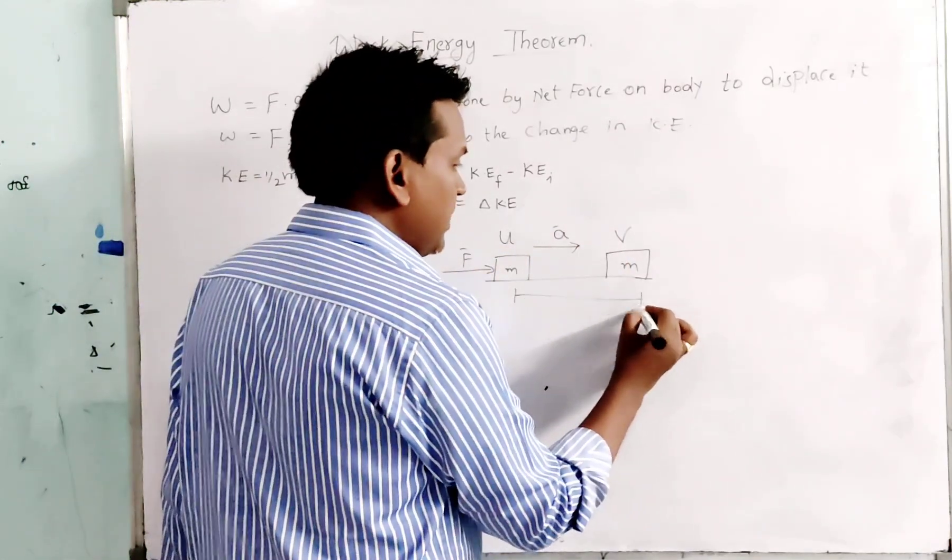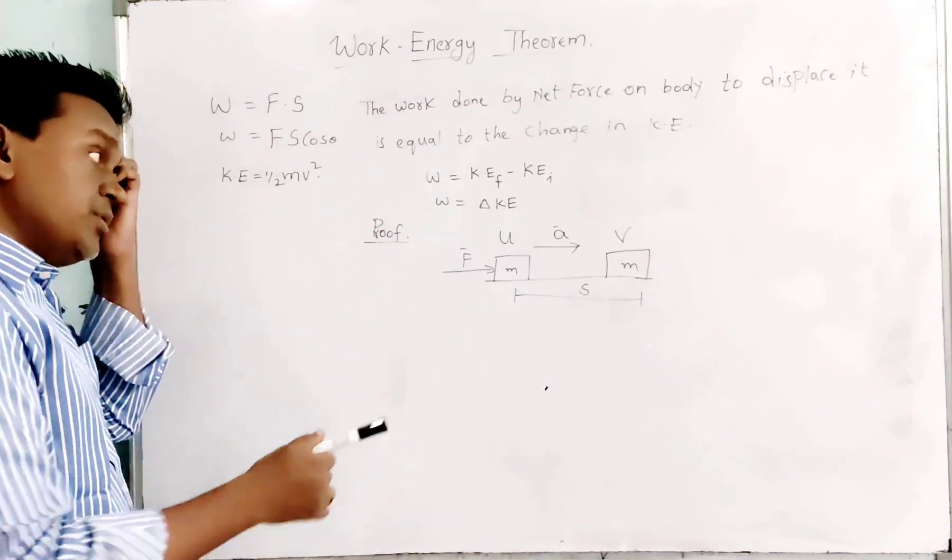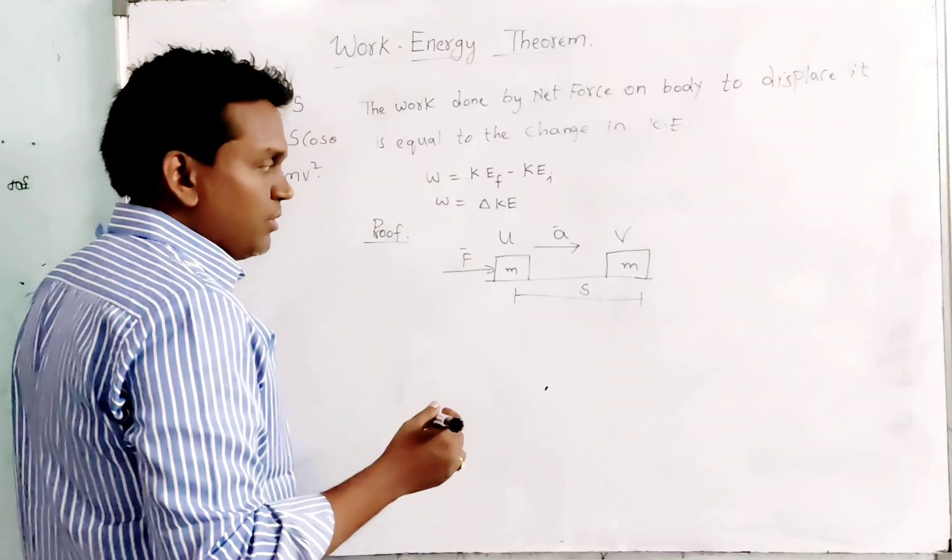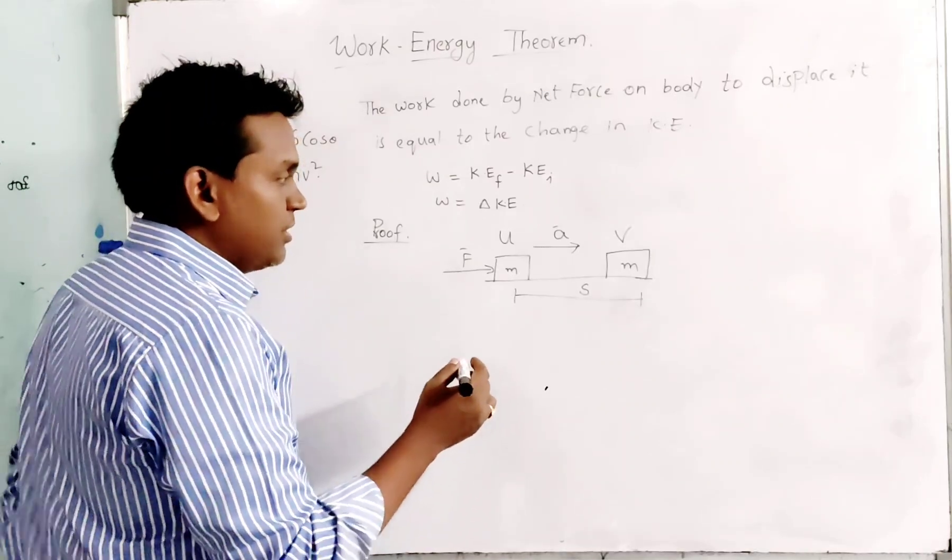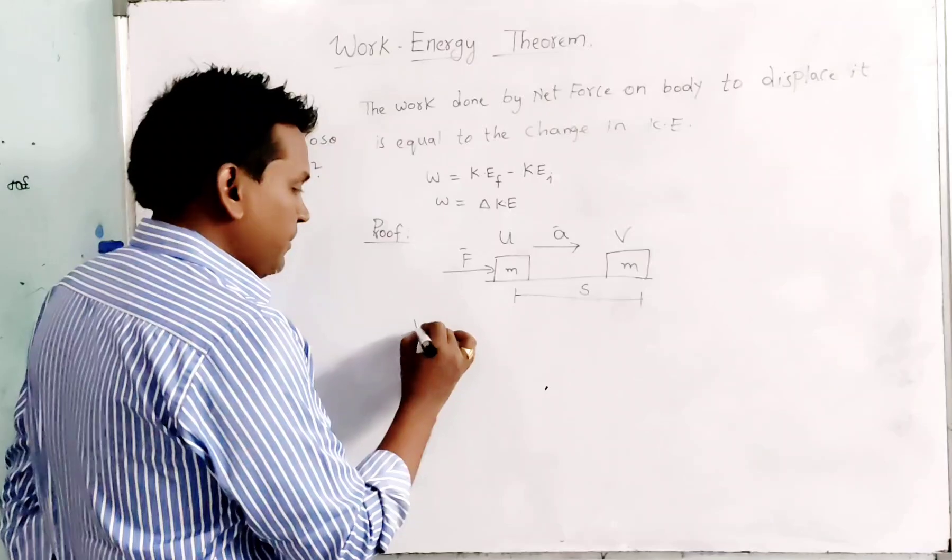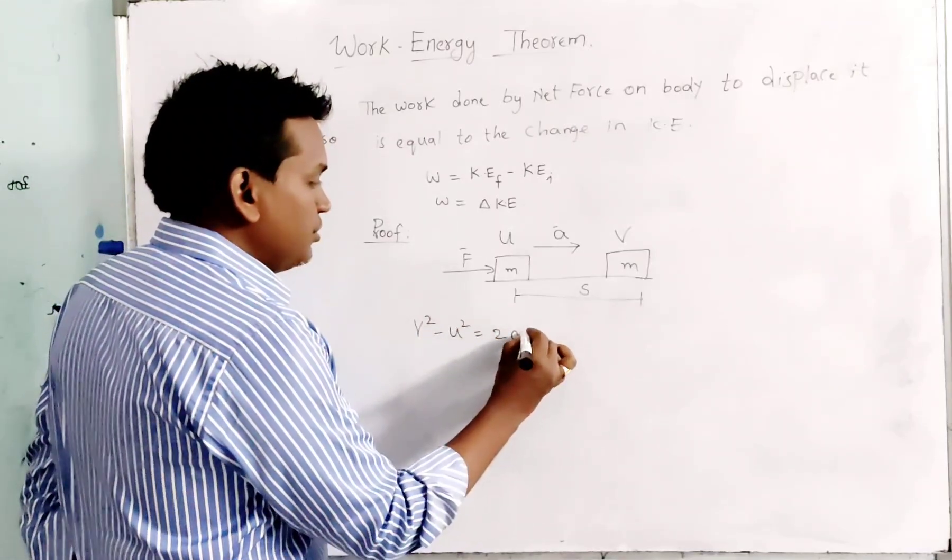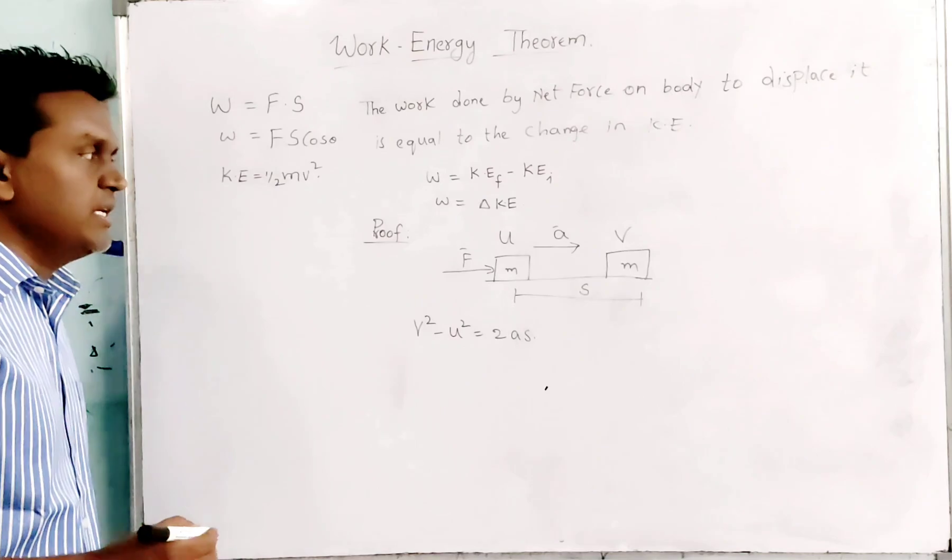The body made some displacement S. Using all these physical quantities, we have to write one equation from equations of motion. That equation is the third equation: V square minus U square equals 2AS.